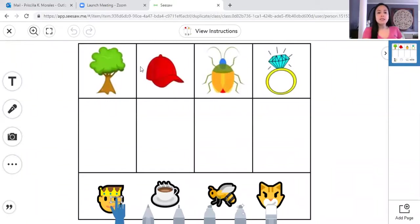All right, so you have these pictures up on the top. You have a picture of a tree, hat—no, I'm sorry, a hat. Let's go back: tree, hat, bug, ring. Let's say that one more time: tree, hat, bug, ring. Now you have pictures here on the bottom that you need to sort them and match them to the right picture.